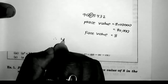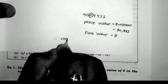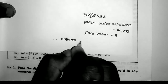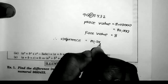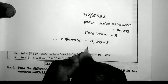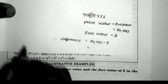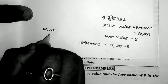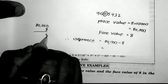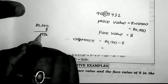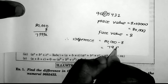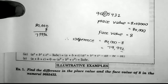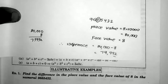Now what is the difference? Difference equals place value minus face value, that is 80,000 minus 8. Doing the subtraction: 80,000 minus 8 equals 79,992. So the answer is 79,992. This is the concept of place value and face value.